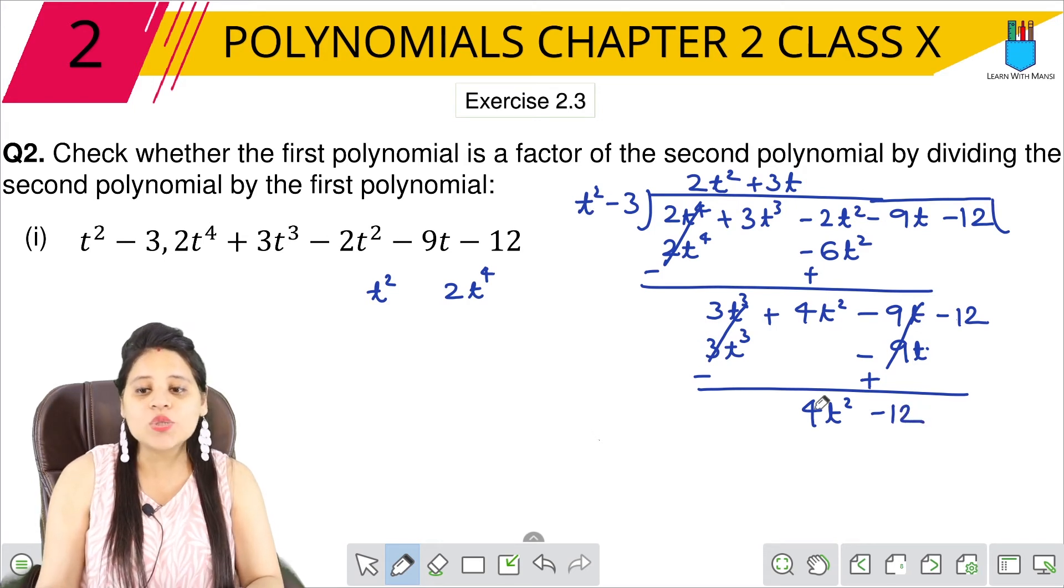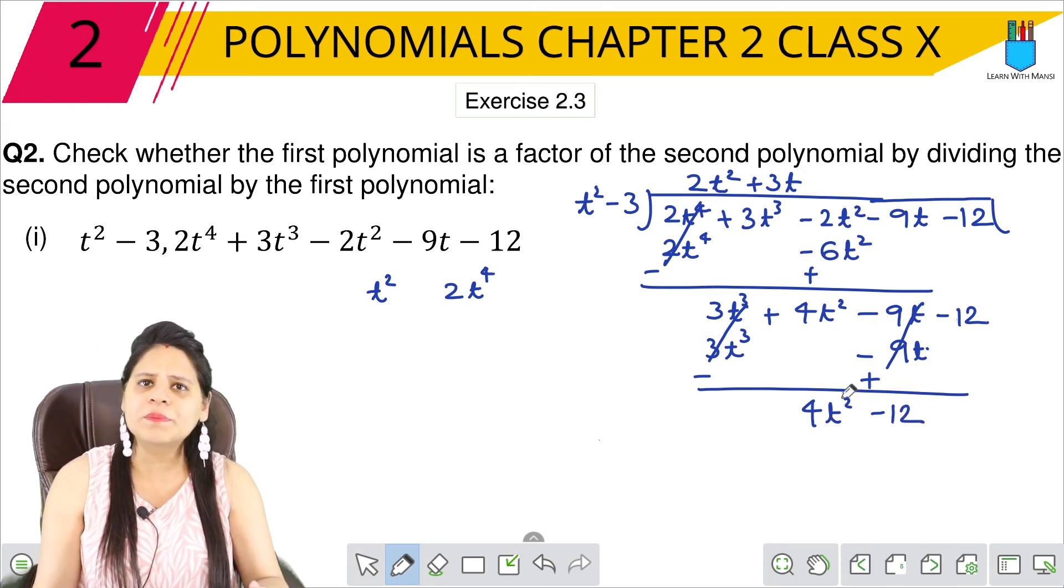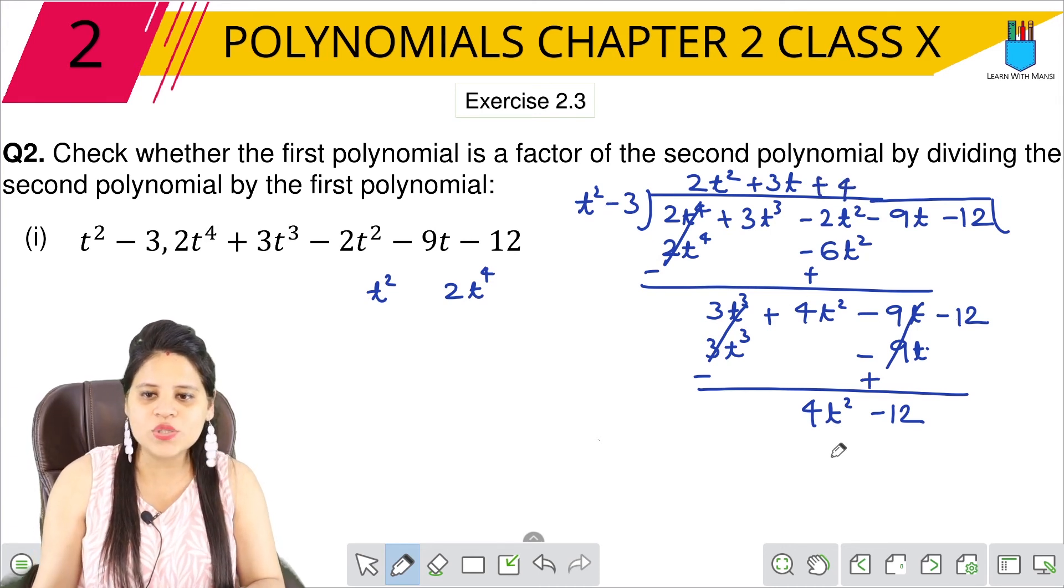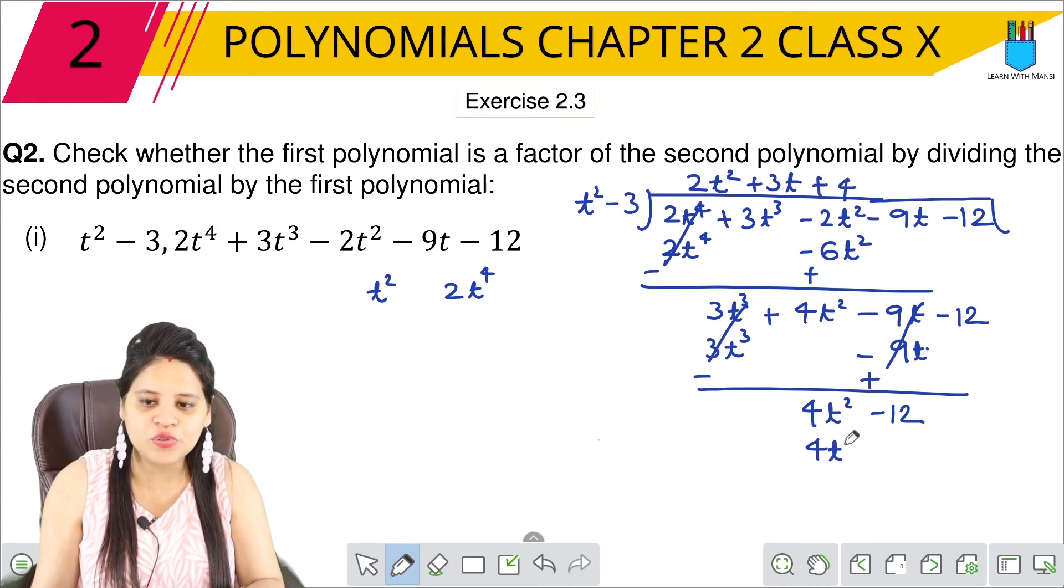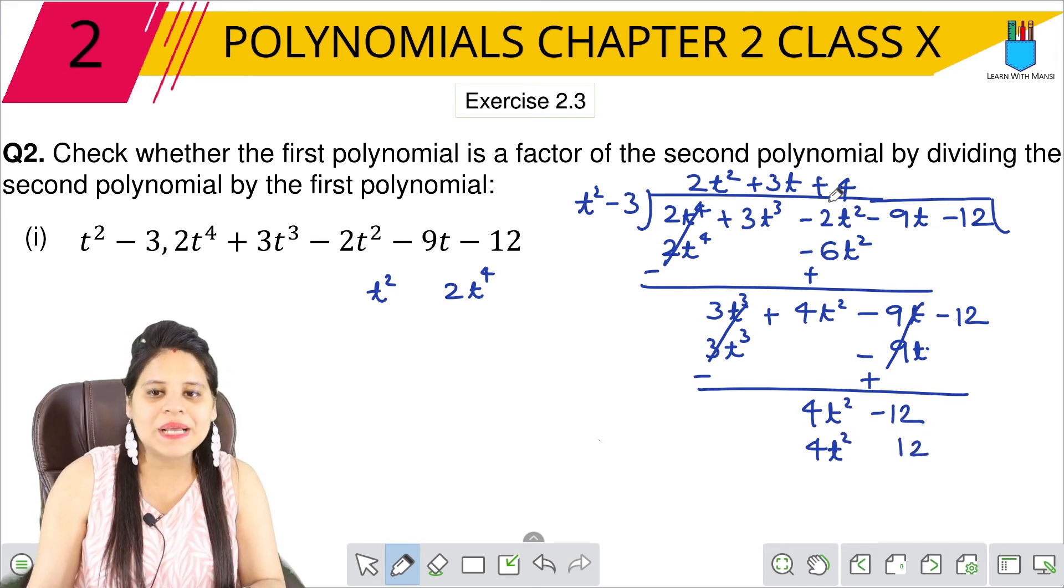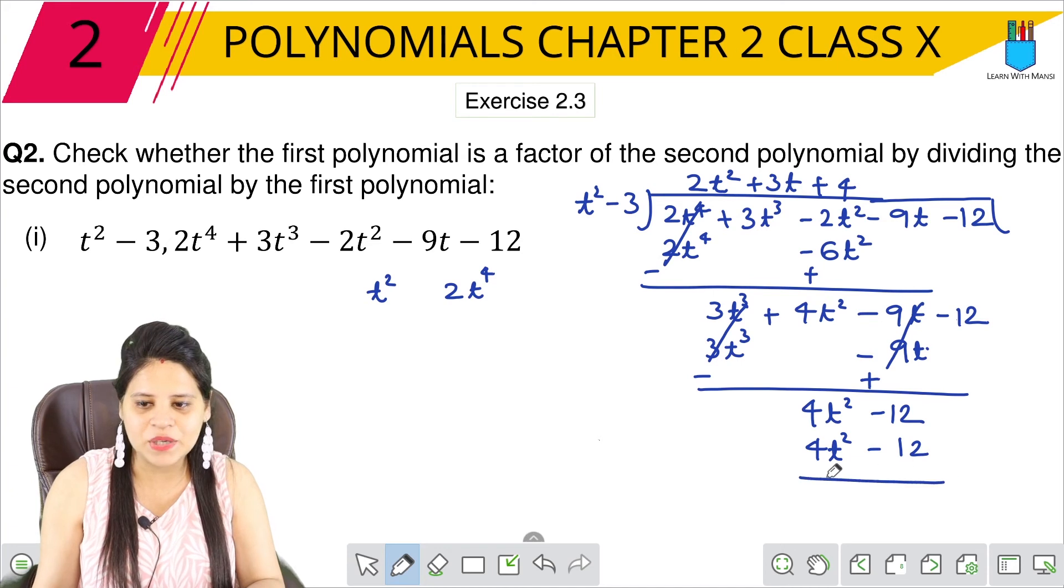Now make 4t² to 4t². Multiply with 4, so plus 4. So t² times 4 is 4t². Then 3 times 4 is 12. Plus minus minus. Here we will change: minus, this is plus. This is also cancelled. This is also cancelled. So we have remainder zero.